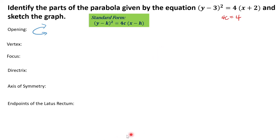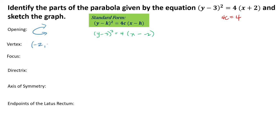From our given equation, to follow the standard form, this would be y minus 3 squared is equal to 4 times the quantity of x minus negative 2, which is x plus 2. So the vertex would be at (h, k), and that would be negative 2, positive 3. Remember that the value with x would be our h, and the value with y would be our k.